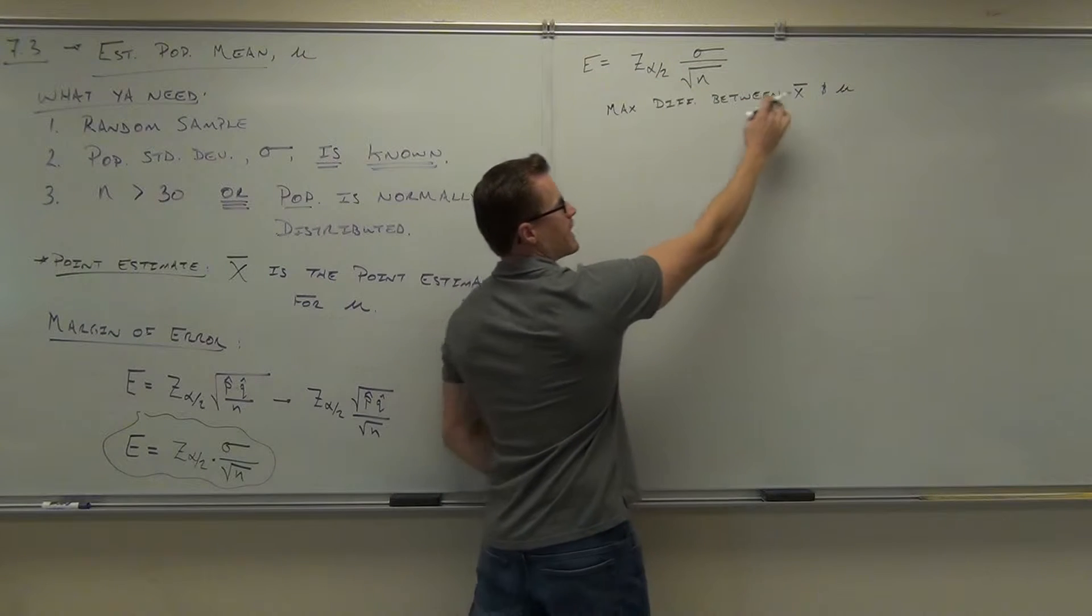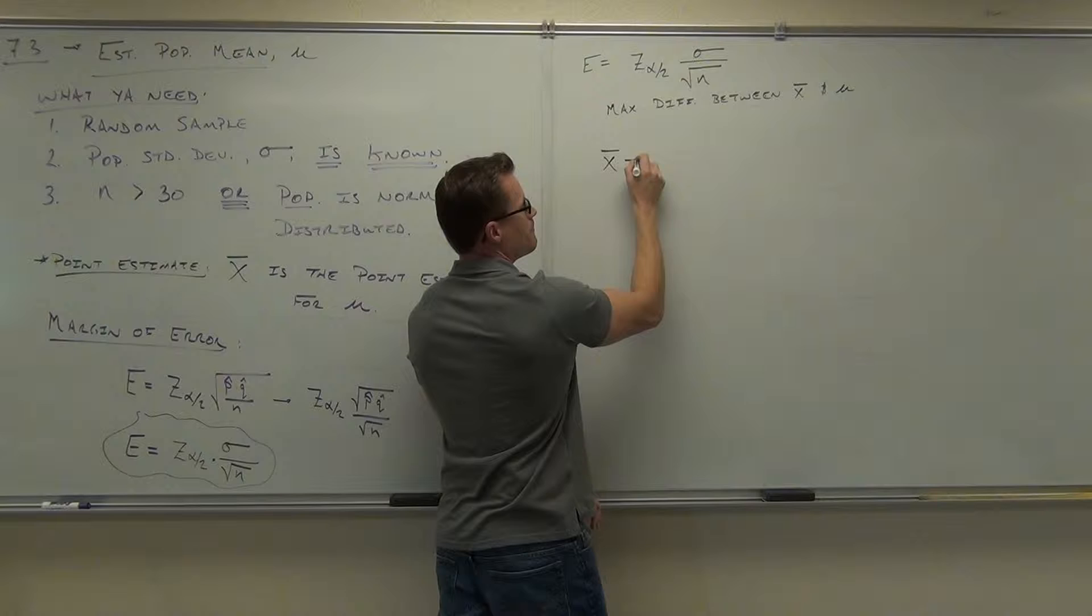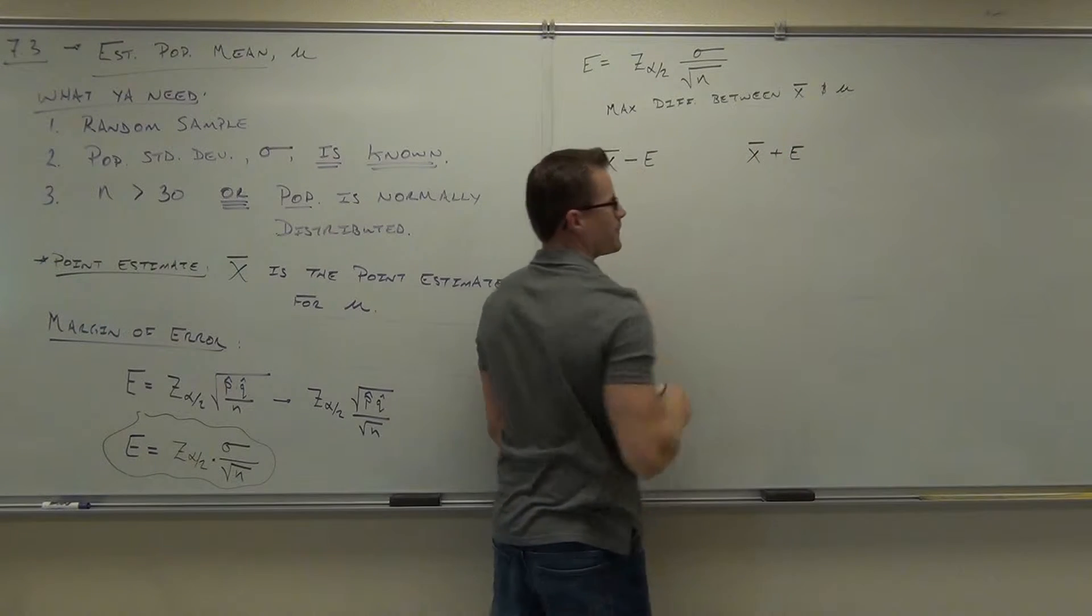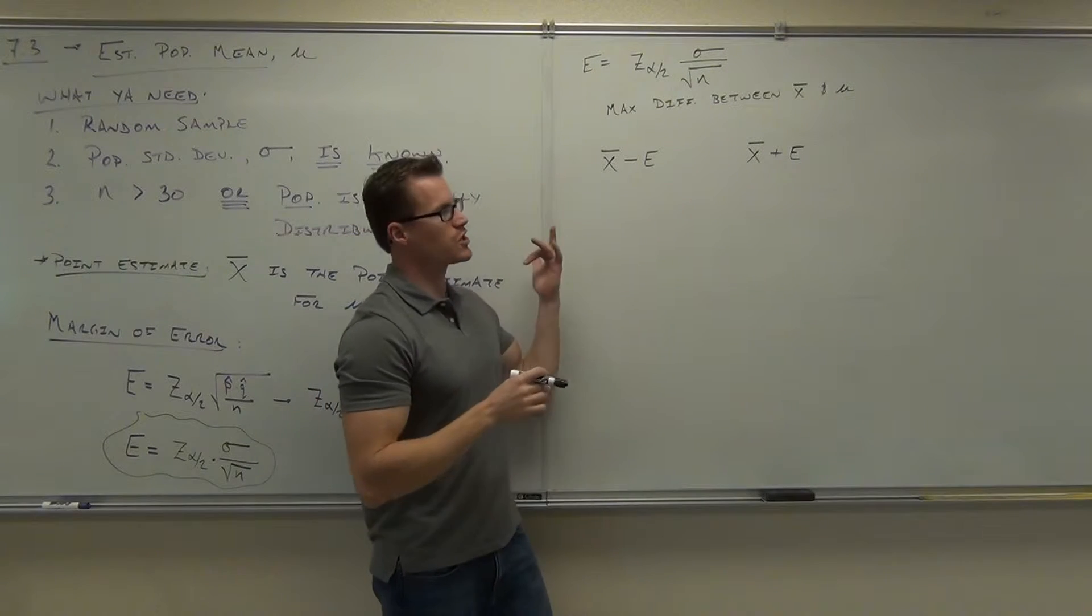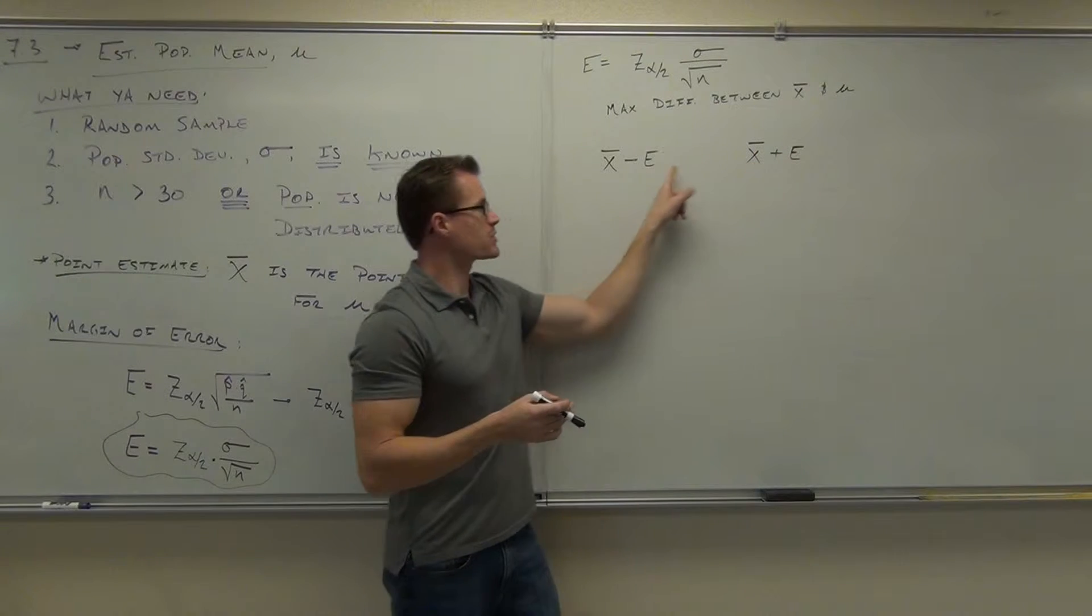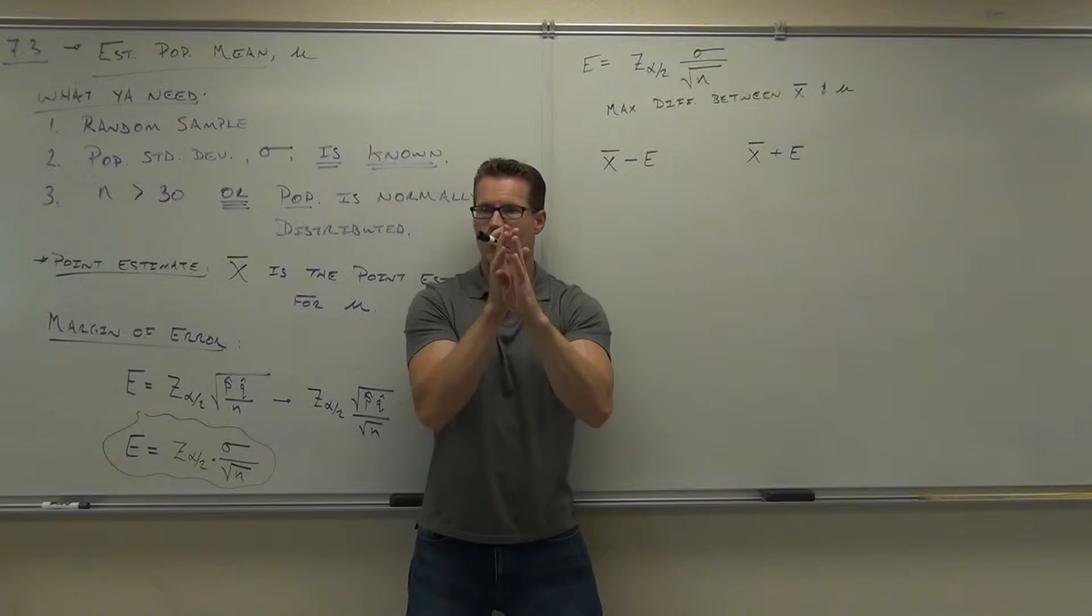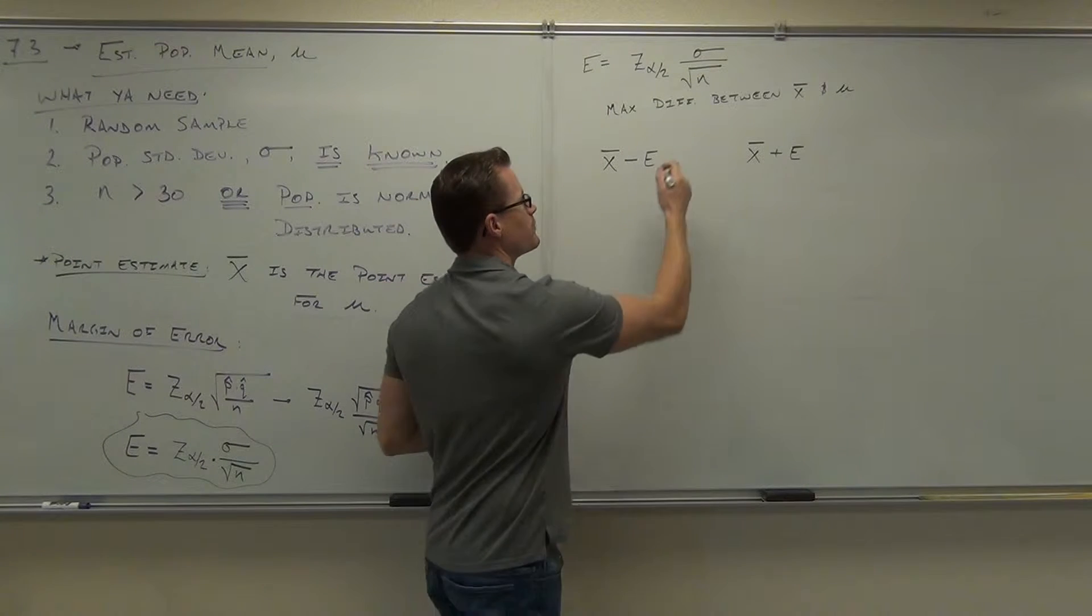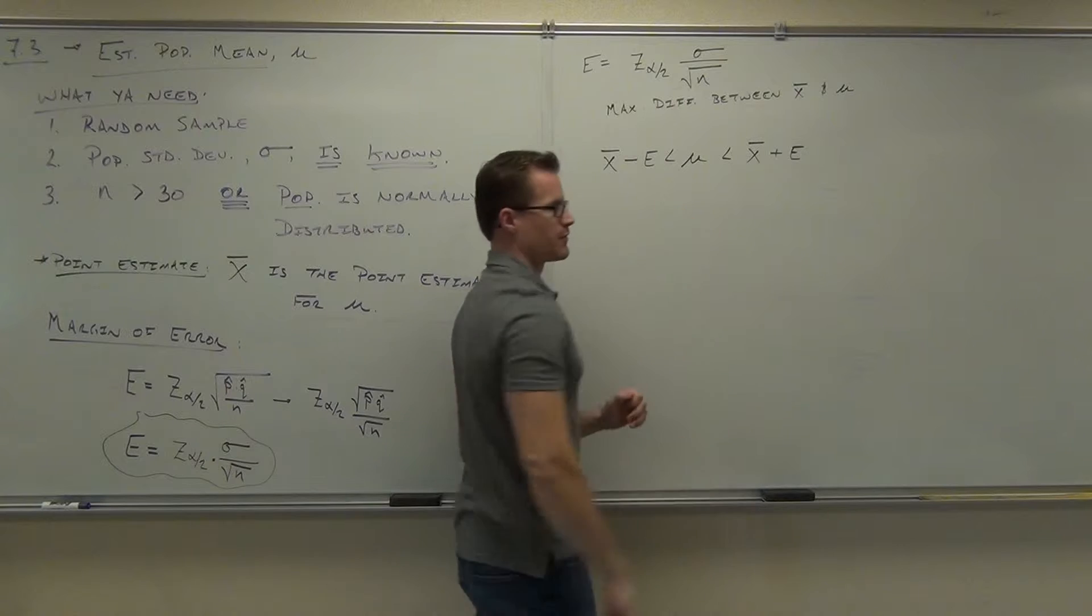If E is the maximum difference between these two numbers, then if I take x bar minus E, and I take x bar plus E, where x bar is my point estimate for mu, it says, well check it out, this would give me an upper range for mu. This would give me a lower range for mu. If this is the maximum difference, I can say, well, then mu is supposed to not be any bigger than this, or any smaller than this. That's what's giving me this nice balance on my confidence interval.